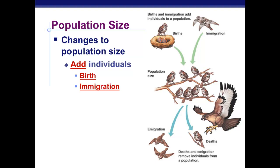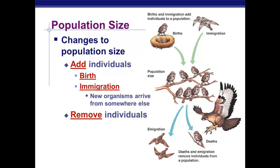Also immigration — because when we're looking at a population, we're looking at things in a certain area. So if new organisms of the same species arrive from outside the area, that's immigration with an I. Conversely, there are only really two ways to remove individuals from the population. The first one, of course, is the opposite of birth, which is death.